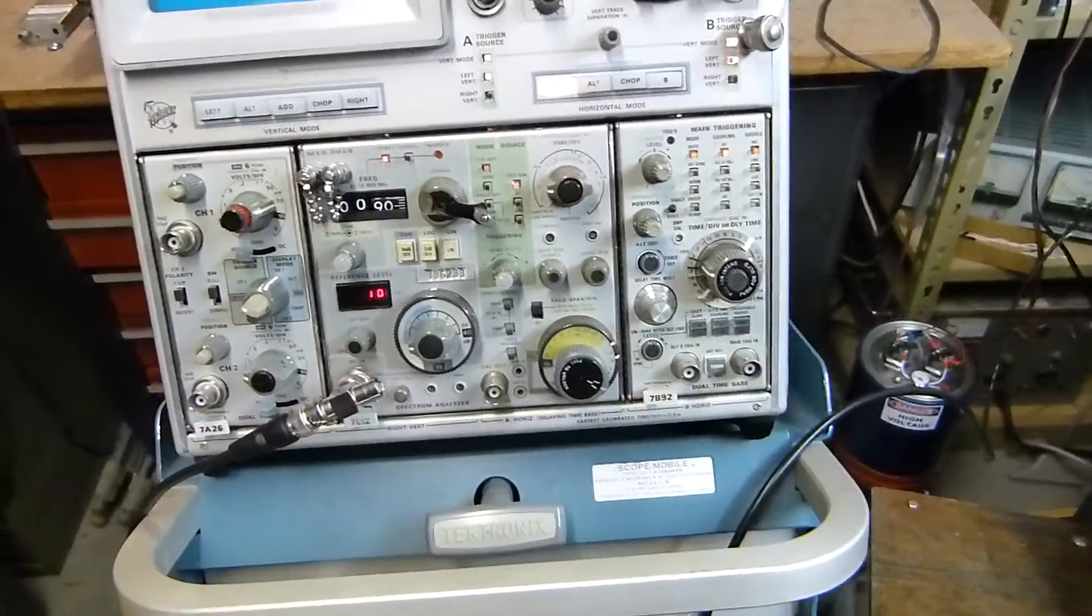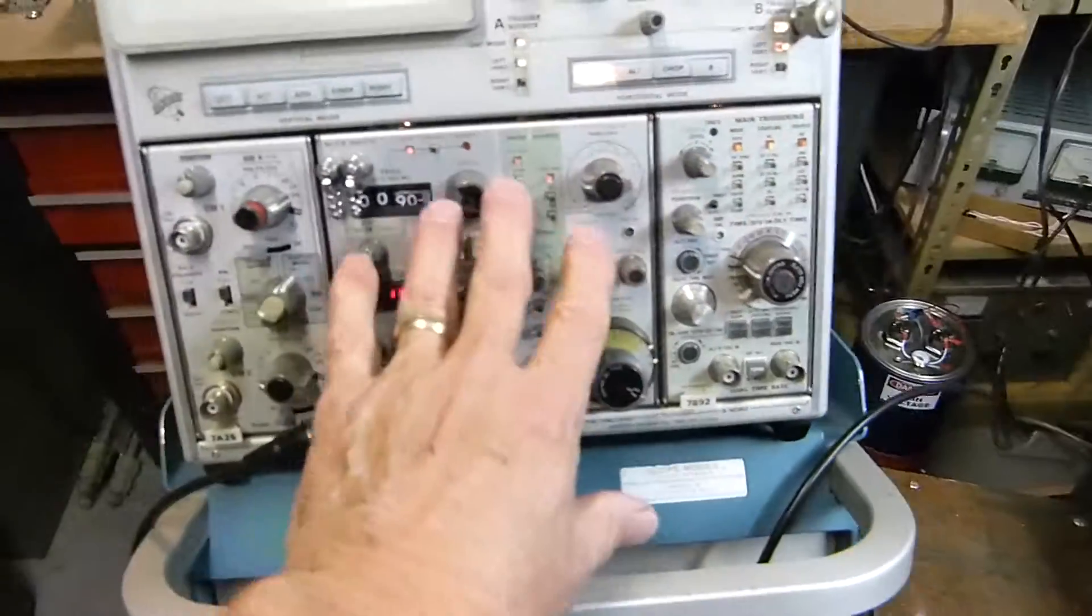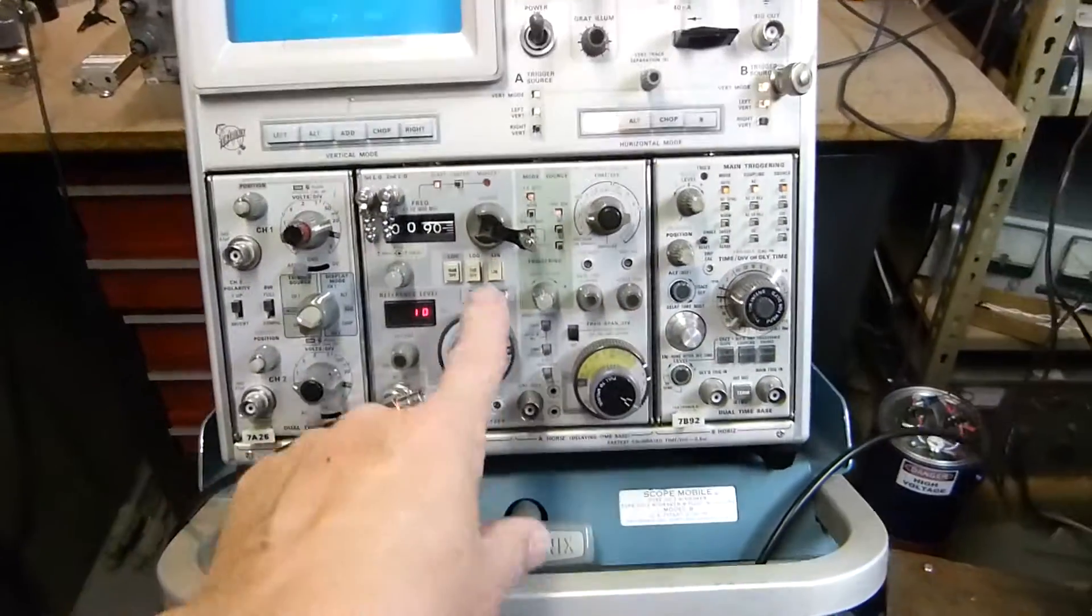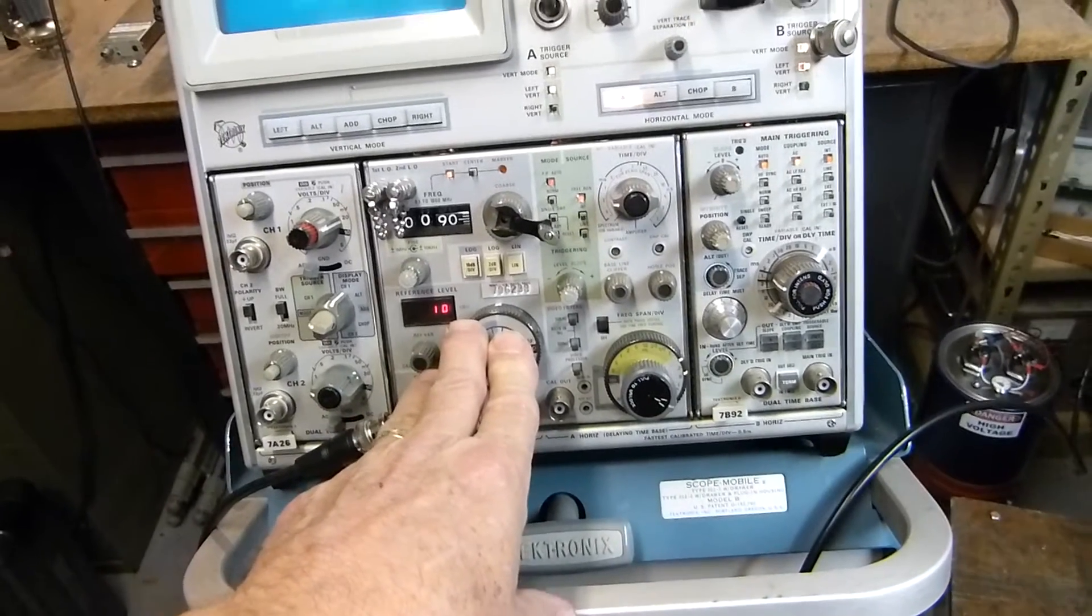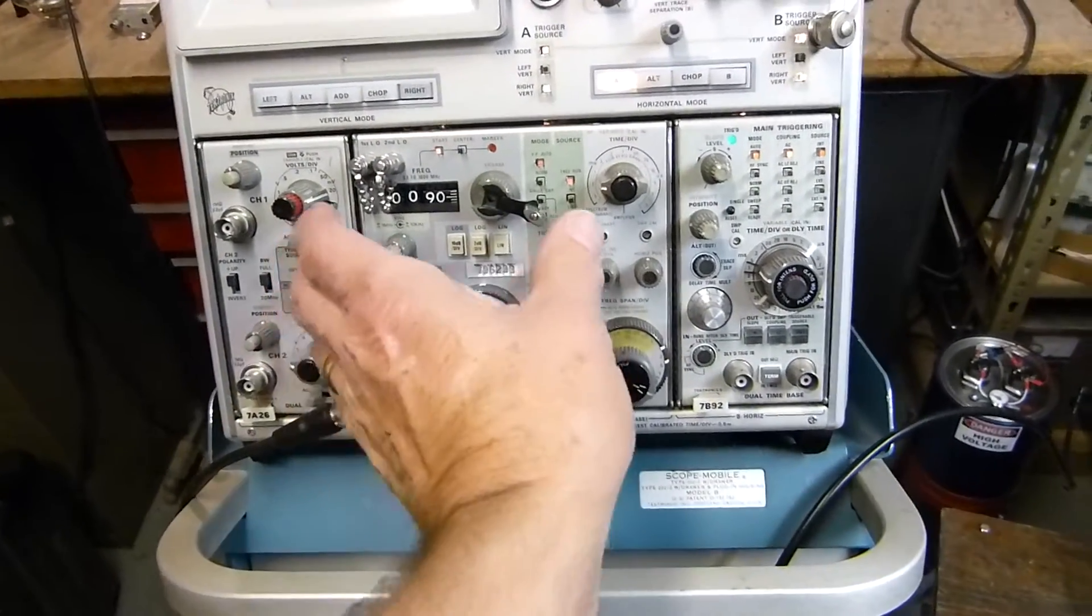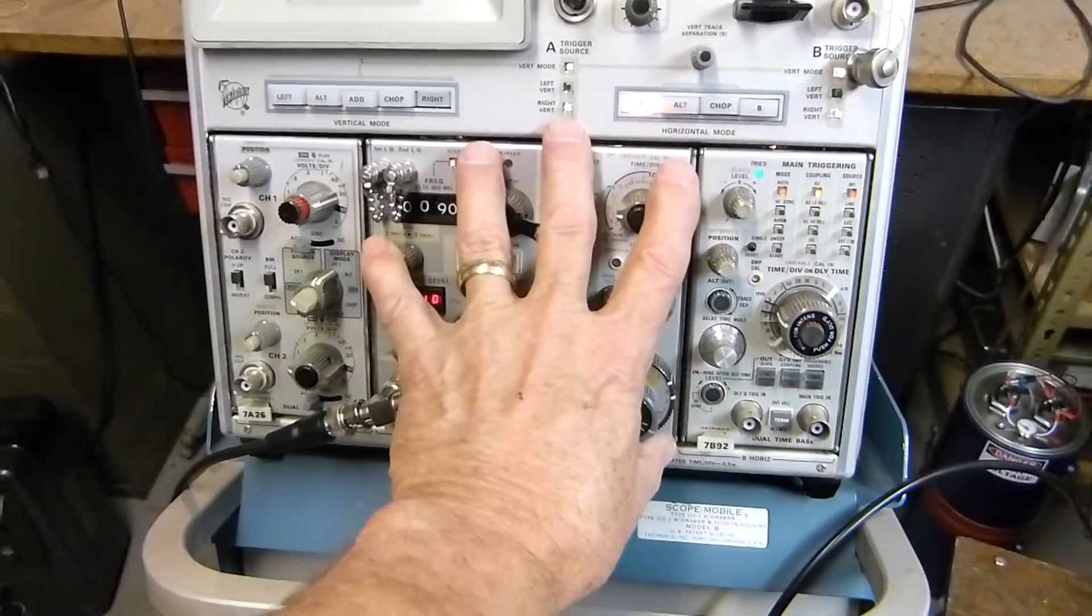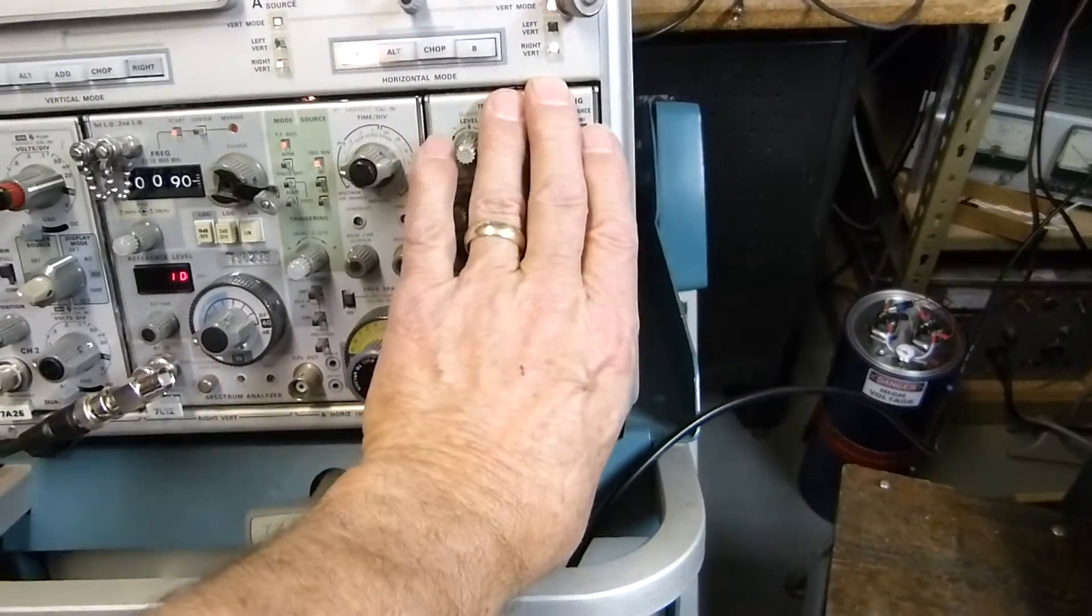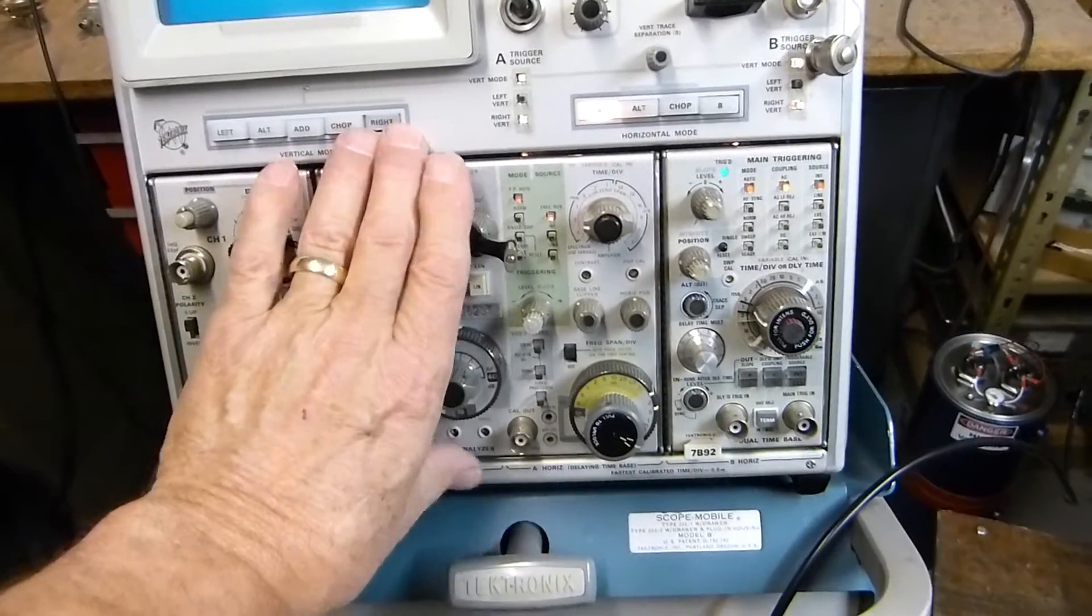This spectrum analyzer is called a 7L12. It goes up to 1.8 gigahertz, just a gorgeous instrument. It being a double wide and an instrument that operates all by itself, it does not need this vertical channel or this time base. So it has to span between a vertical channel and a horizontal channel. That's why it plugs into the middle.